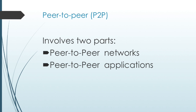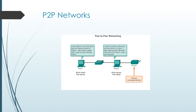When accessing information on a networking device, the data may not be physically stored in that device, so a request must be made to the device where the destination resides. In the peer-to-peer networking model, data is accessed from a peer device without the use of a dedicated server. This model involves two parts: peer-to-peer networks and peer-to-peer applications. In a P2P network, two or more computers connected via a network can share resources such as printers and files. Every connected end device, known as a peer, can function as both a server and a client. The roles of client and server are set on a per-request basis.